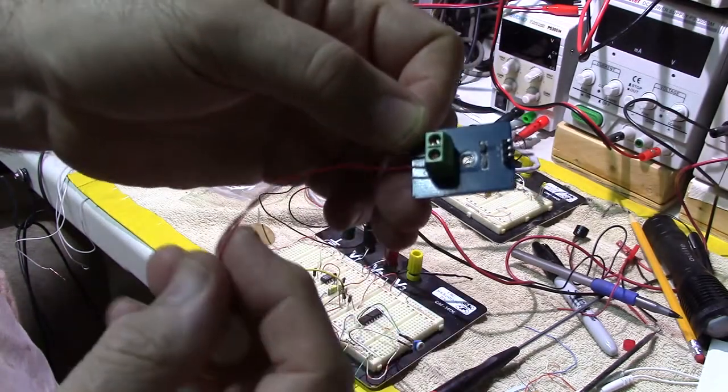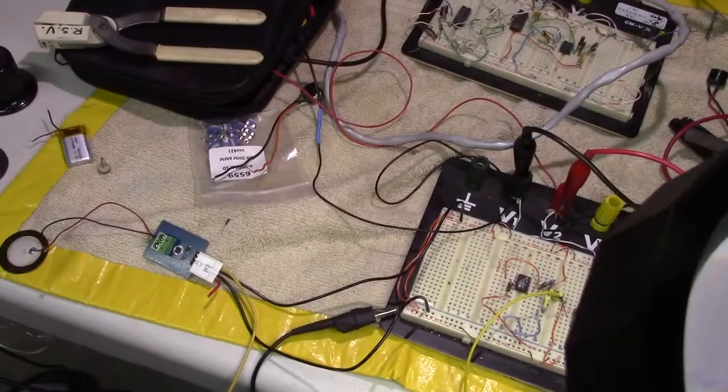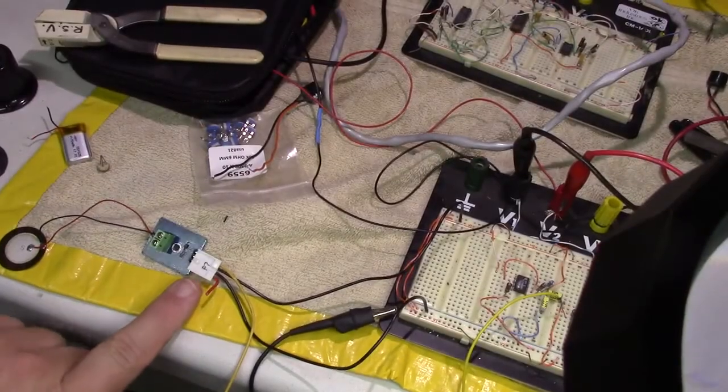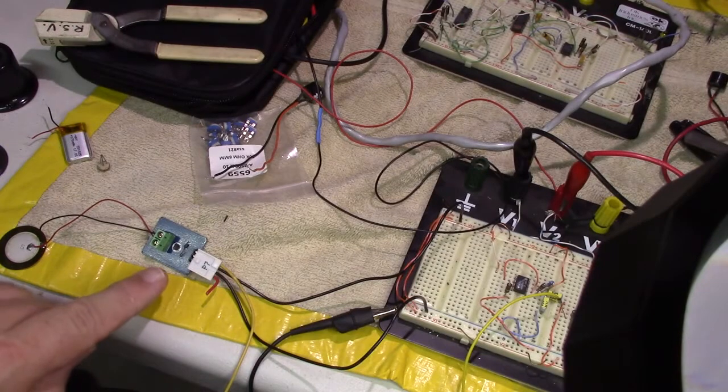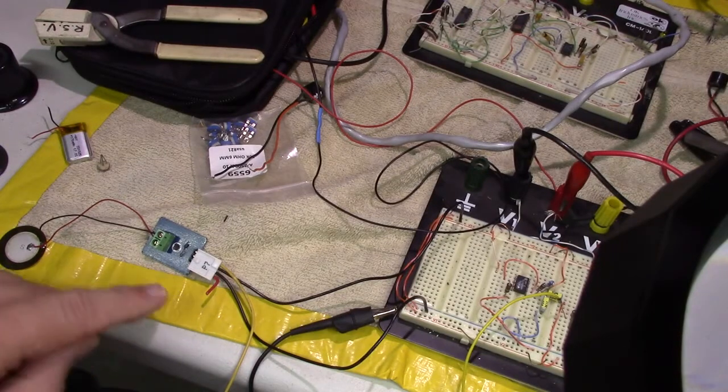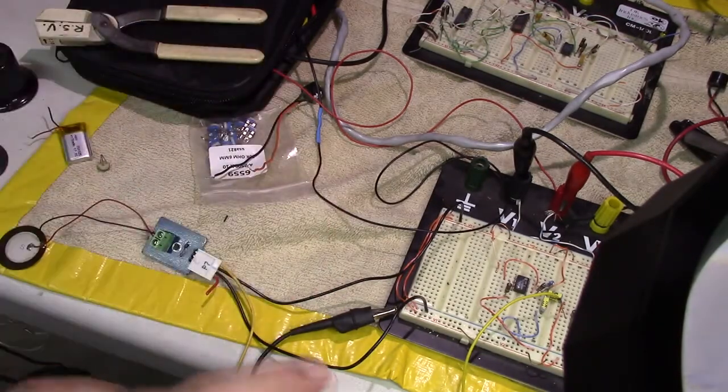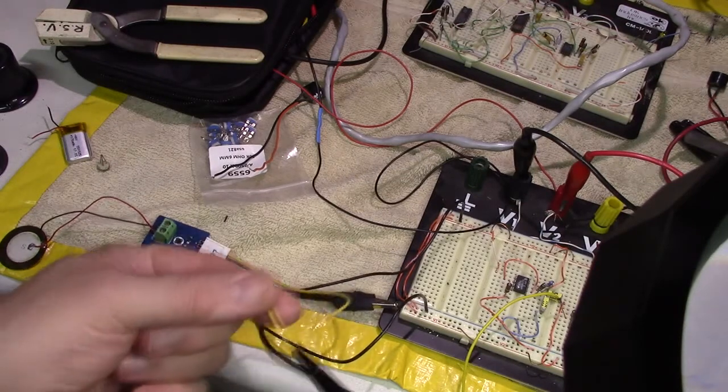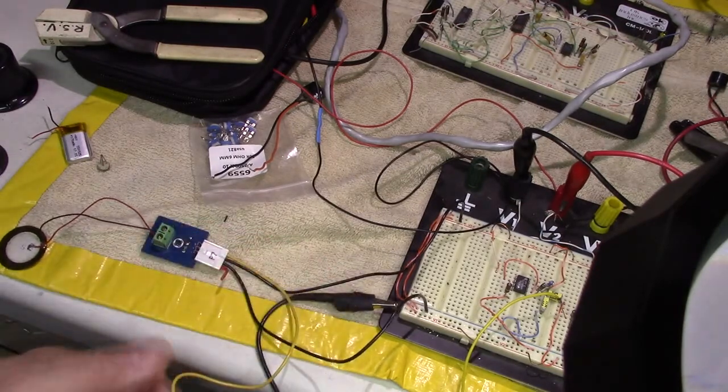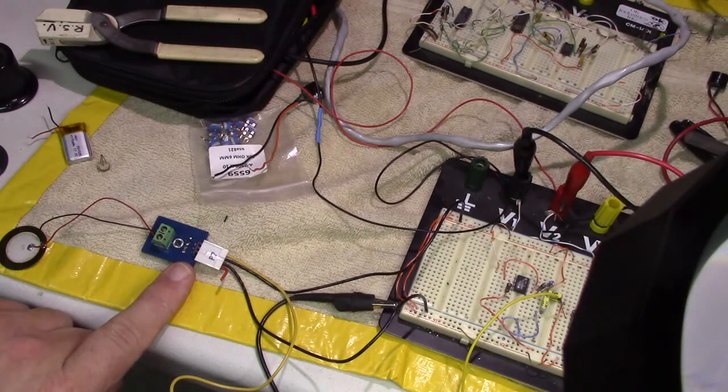So here I have it hooked up with the connectors. I've got minus, plus, and then this is the signal right here, which is the yellow wire, and I have it going to an oscilloscope. Looking at close inspection of this, there is a little amplifier in there and a little resistor array, so it is amplifying the incoming signal.